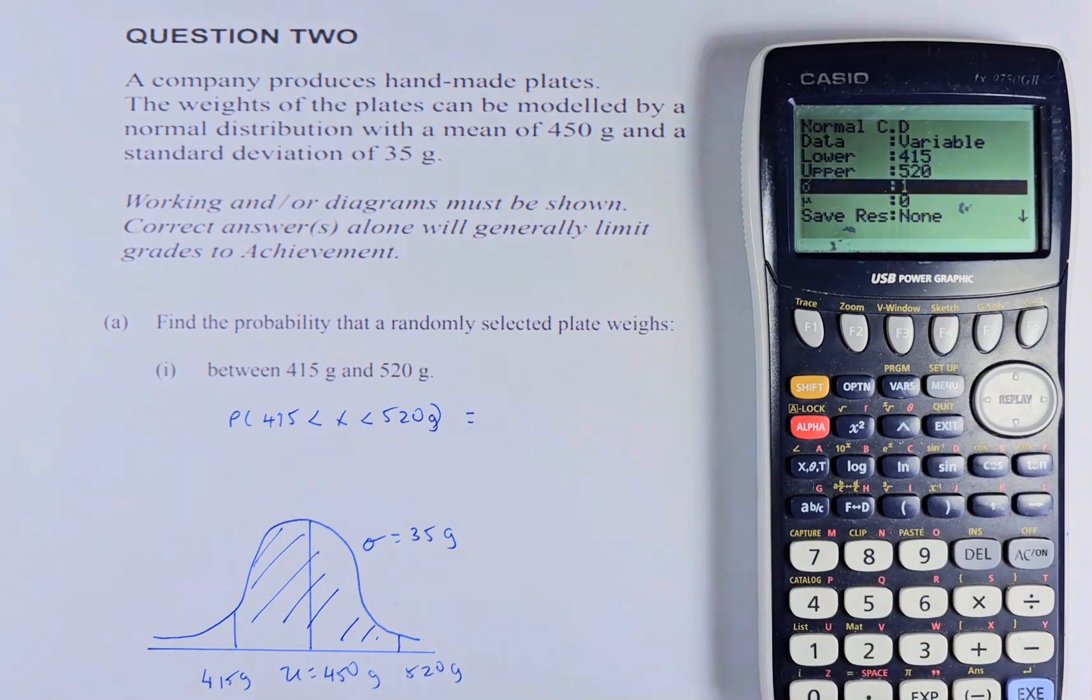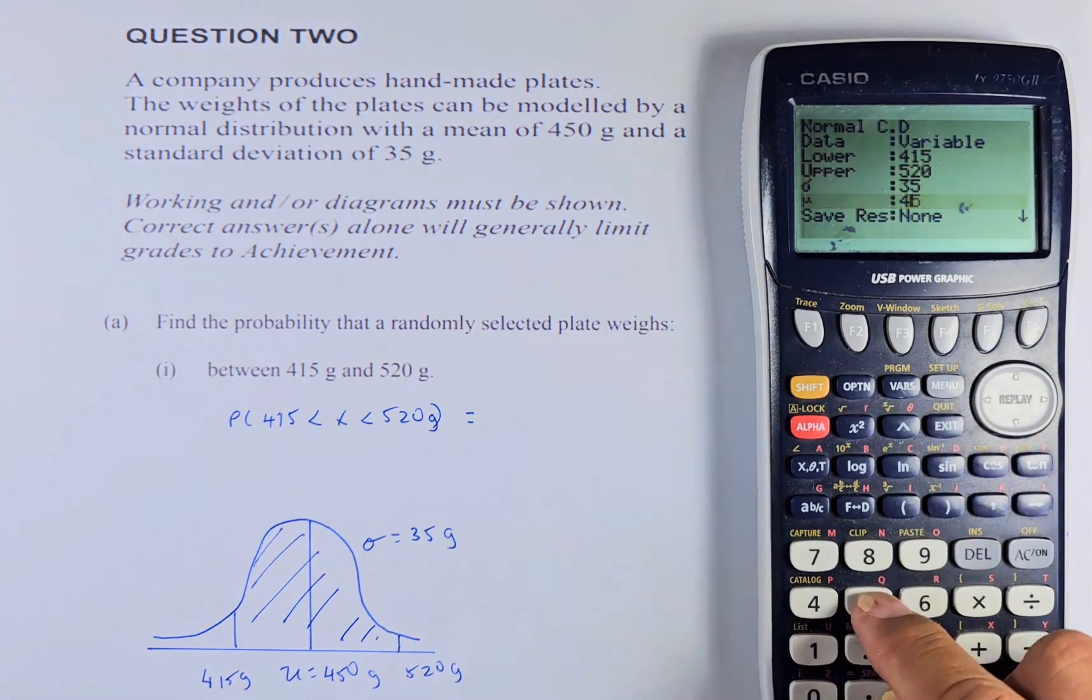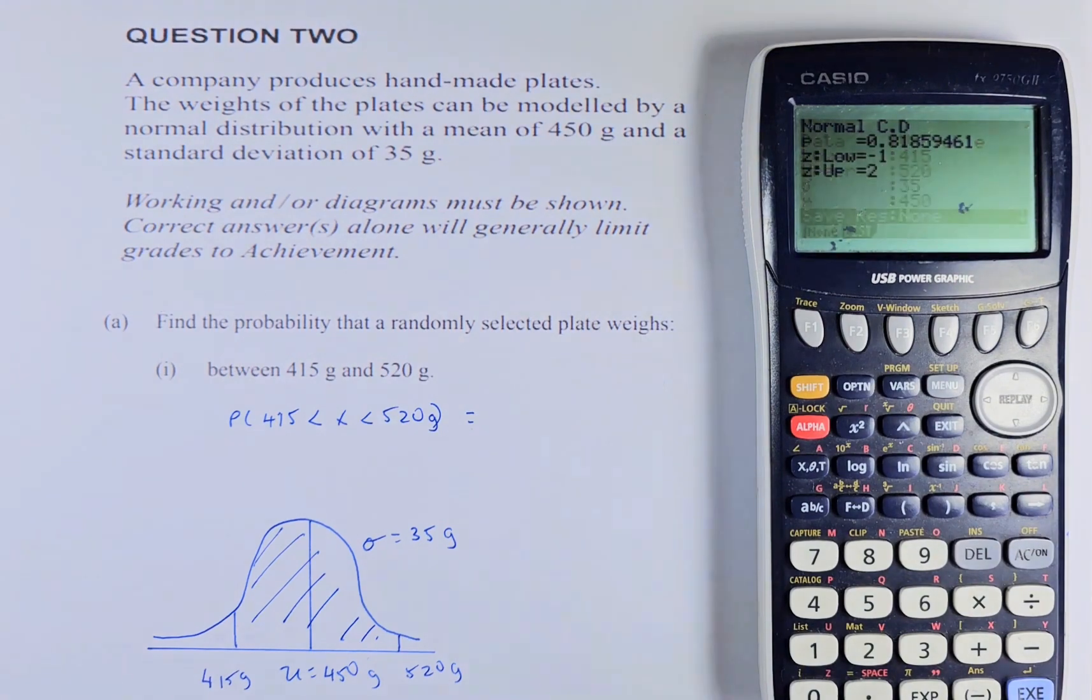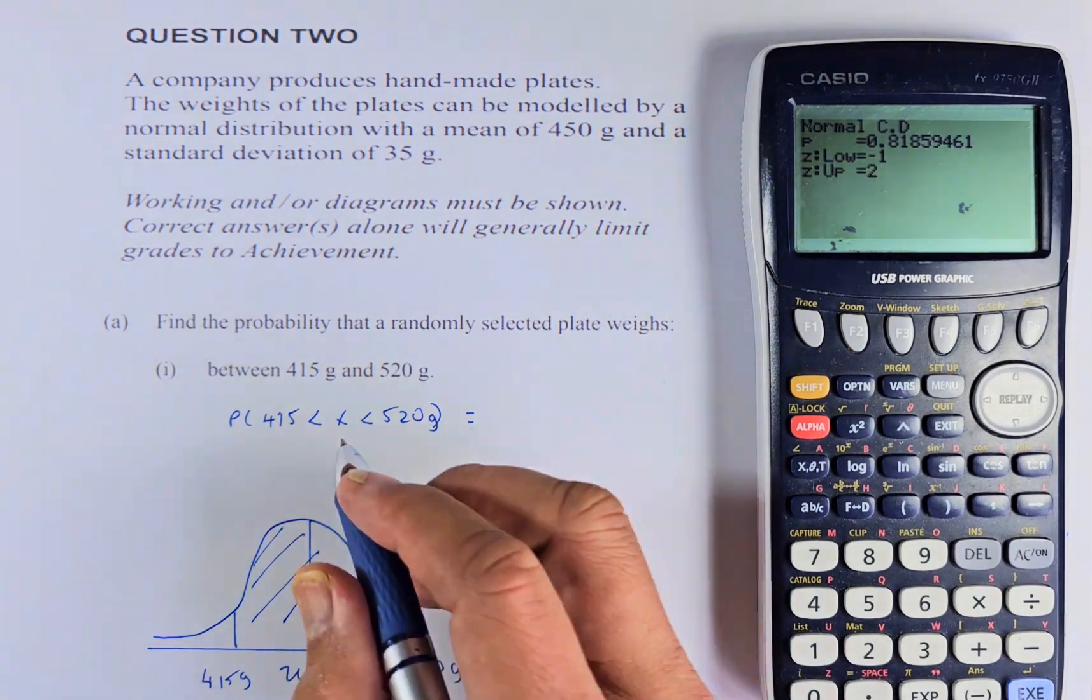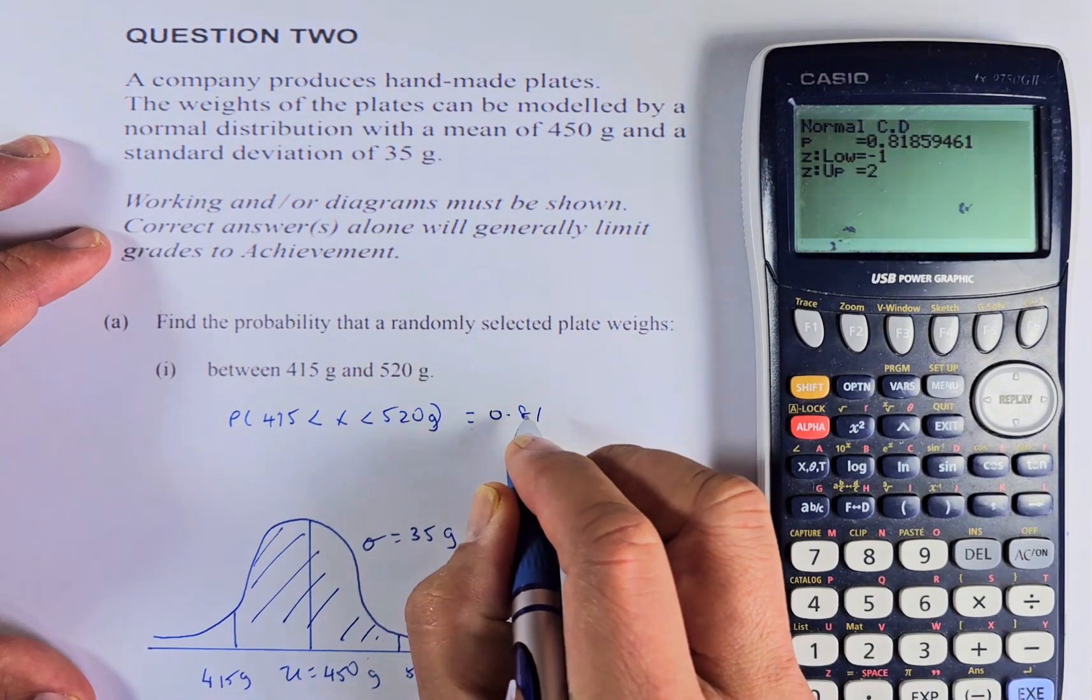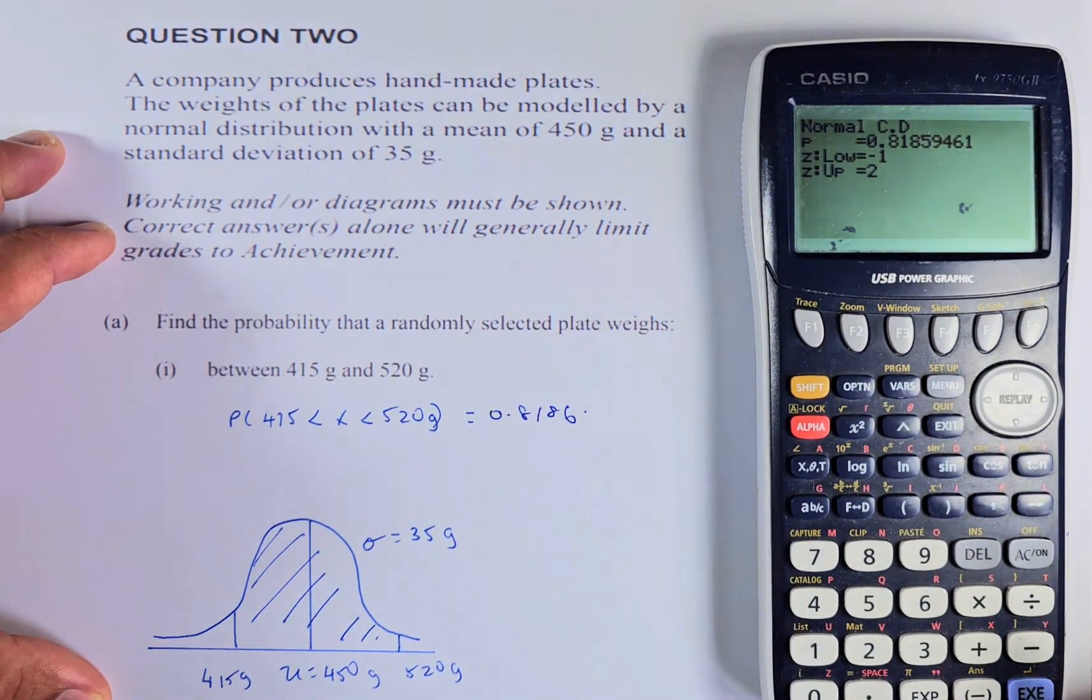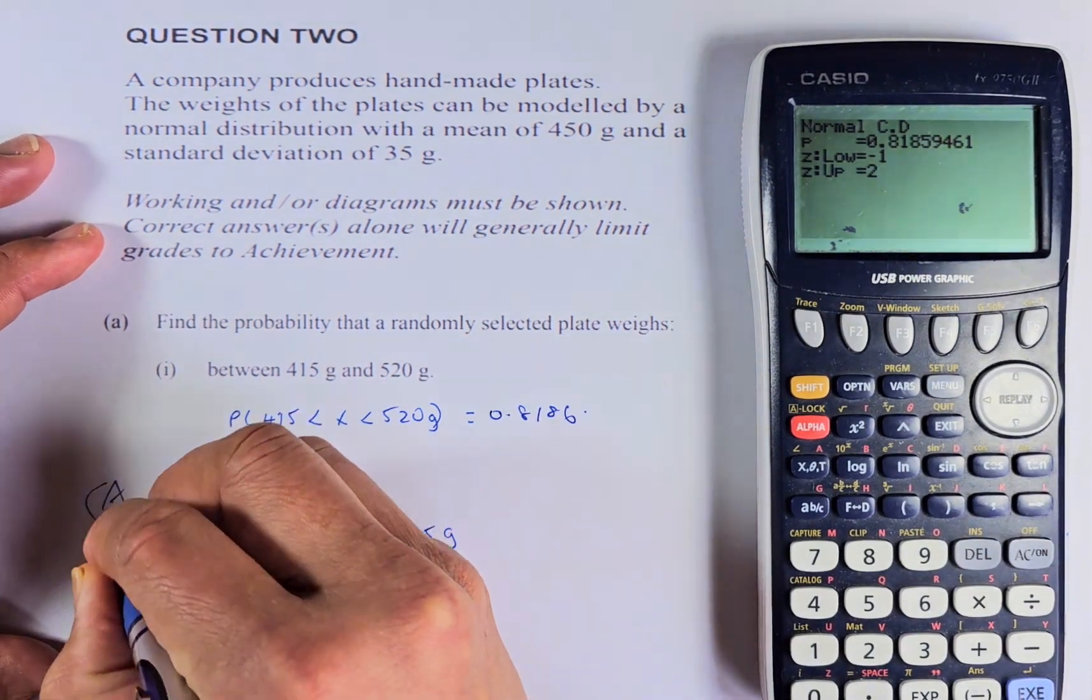Execute. Your sigma is 35. And then your mean is 450. Once you have done that, just put execute. Execute twice. And the answer is going to be 0.8186. So if you can get that right, that will give you a simple achieve.